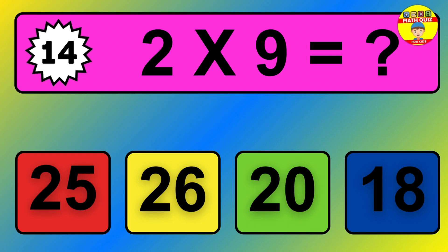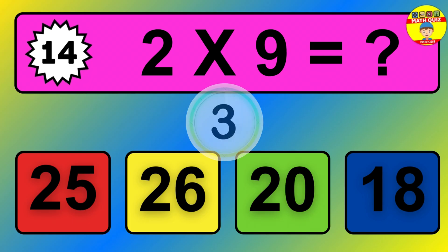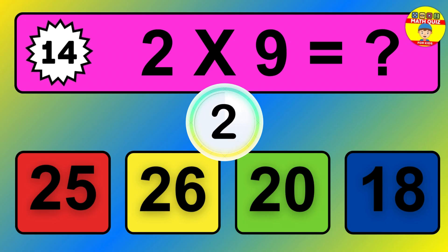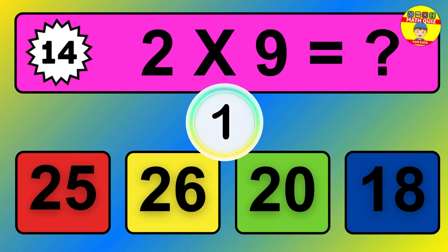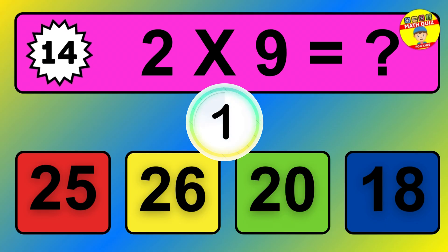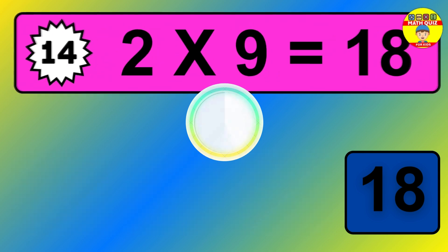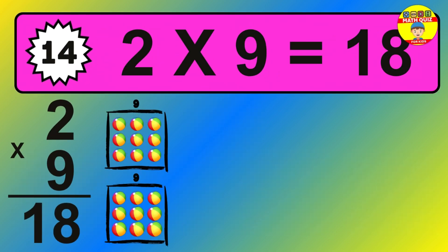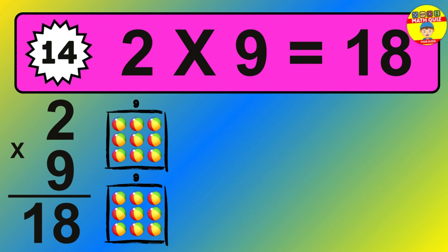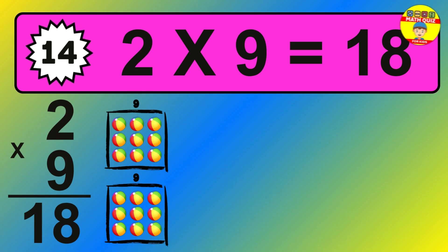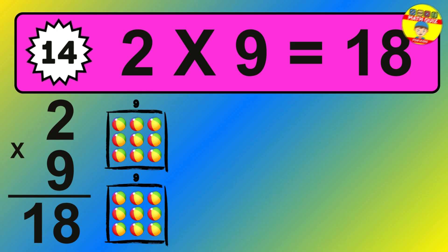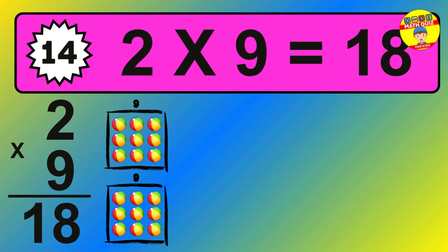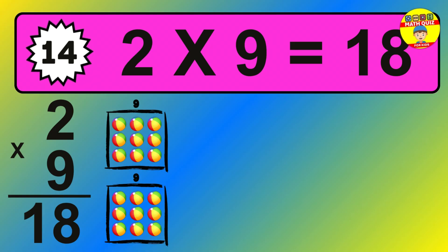Question 14. 2 times 9 equals what? The answer is 2 times 9 is 18. To calculate, we have 2 groups with 9 balls each one. So how many balls do we have? 18 balls.